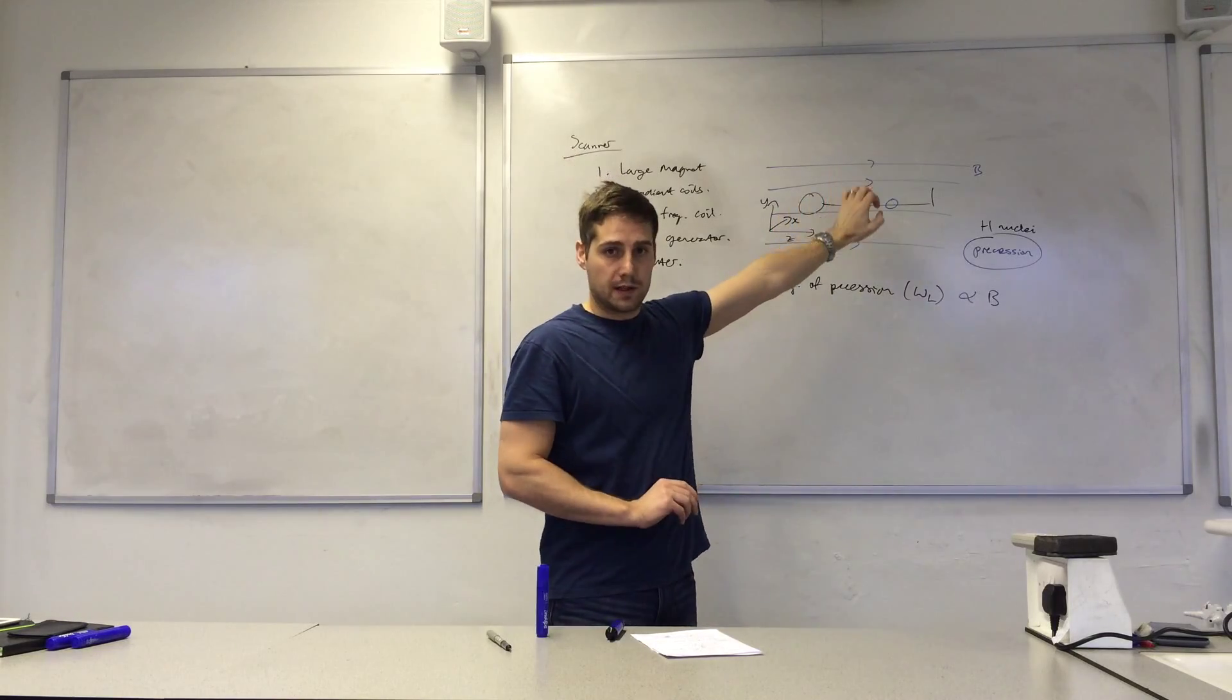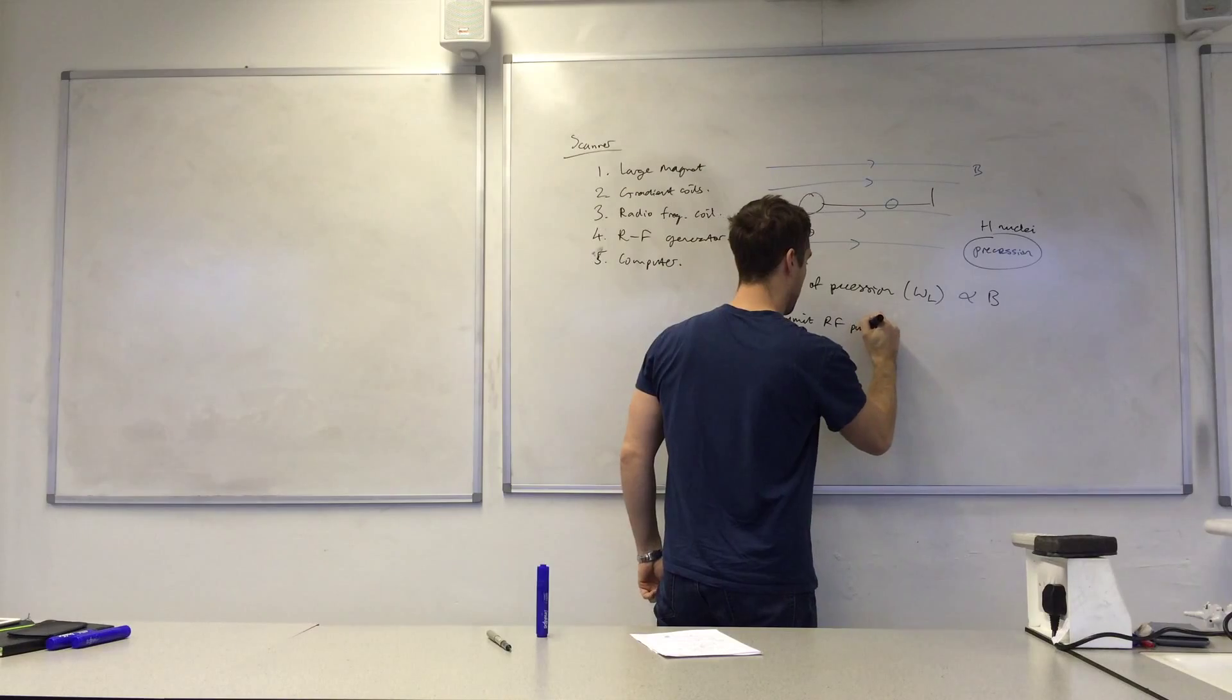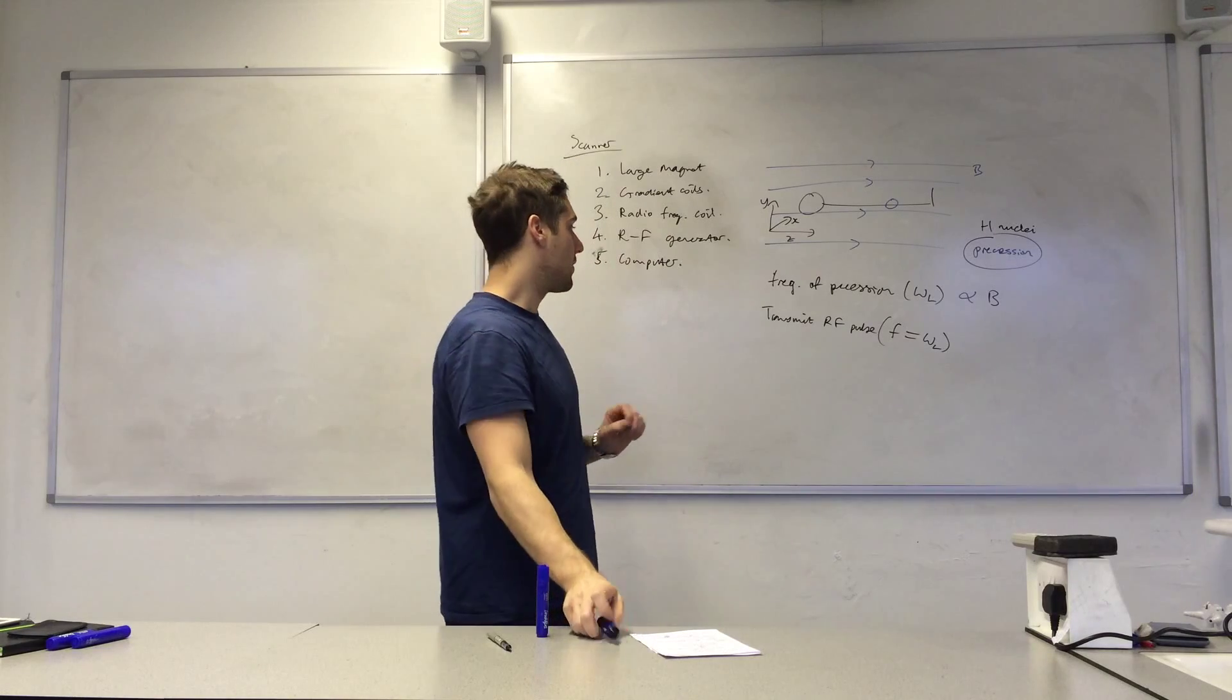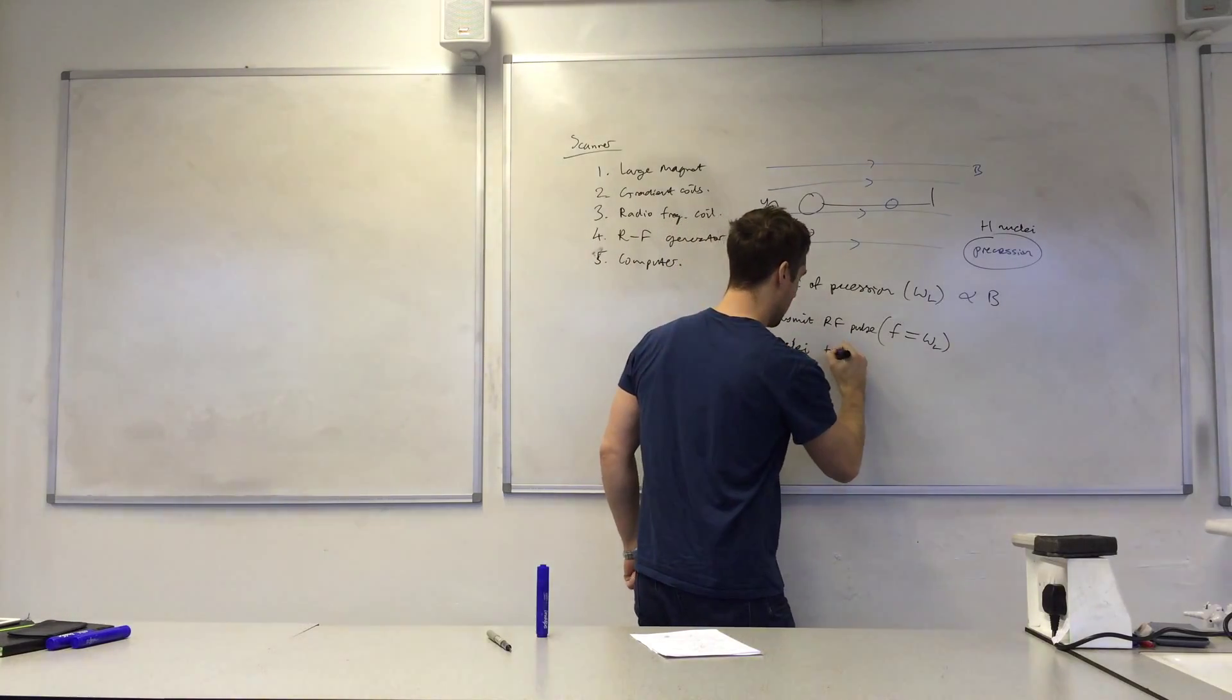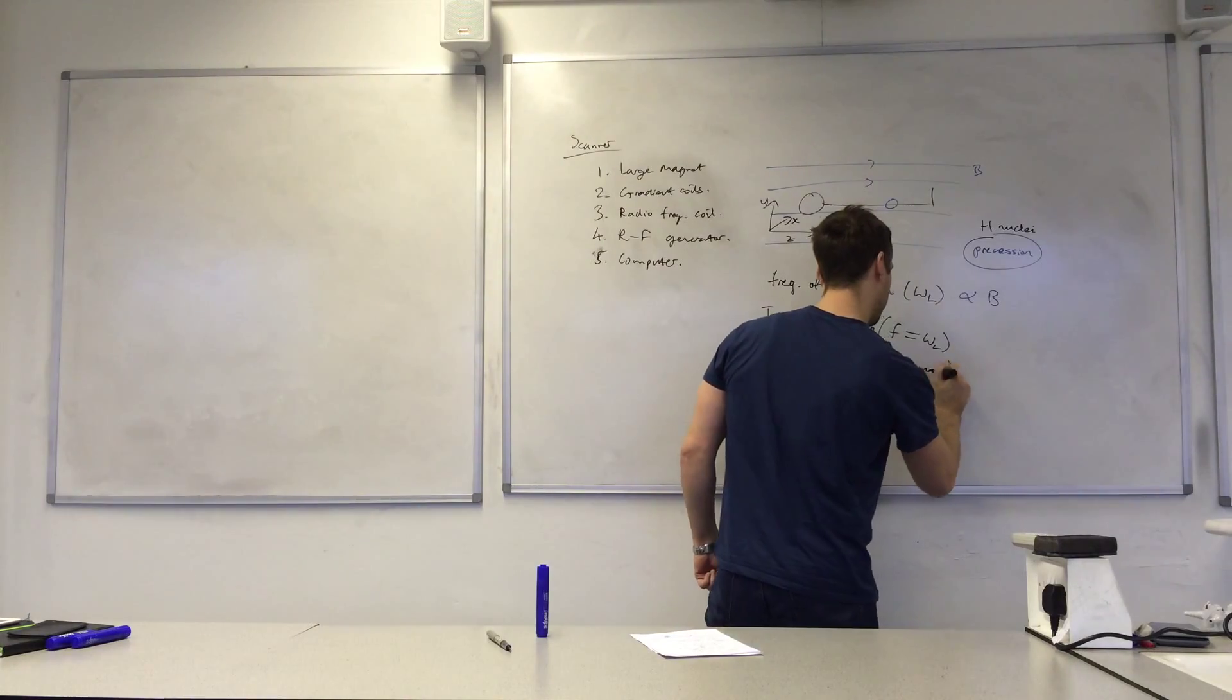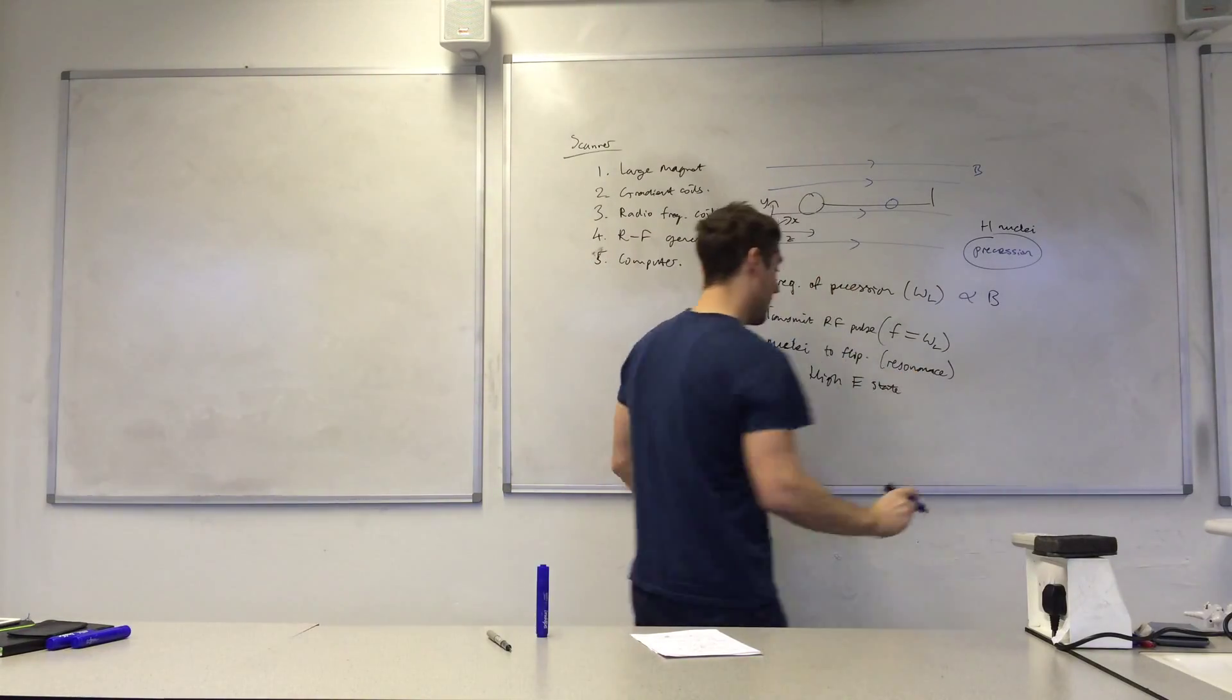Okay, so what we've done is we've identified the part of the body we're going to scan. So then we send in a radio frequency pulse with a frequency equal to the Larmor frequency. It's going to be probably in the megahertz range. What that will do is cause the nuclei to flip because it will cause them to resonate, and that flips them into a high energy state. So they're in a high energy state now.